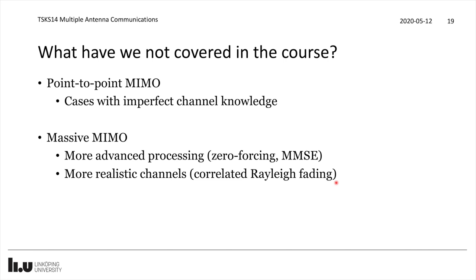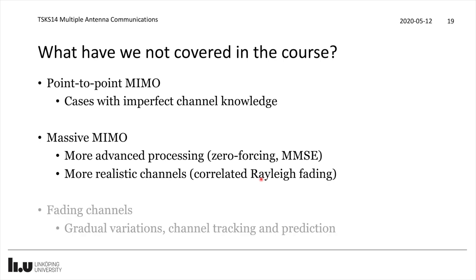For example, if you want to understand how pilot contamination behaves in a more general fashion, it's very important to also know about correlated Rayleigh fading. When it comes to fading channels, we were using a simplified model called block fading with coherence intervals — a fixed channel within one coherence interval, then another random realization in the next. In reality, we have more gradual variations of the channel, both within a coherence interval and between them. It won't be totally independent between different coherence intervals, but there are possibilities of tracking channels or predicting how they will look in the future — possibilities to exploit the fine details of fading channels in a much more advanced way.